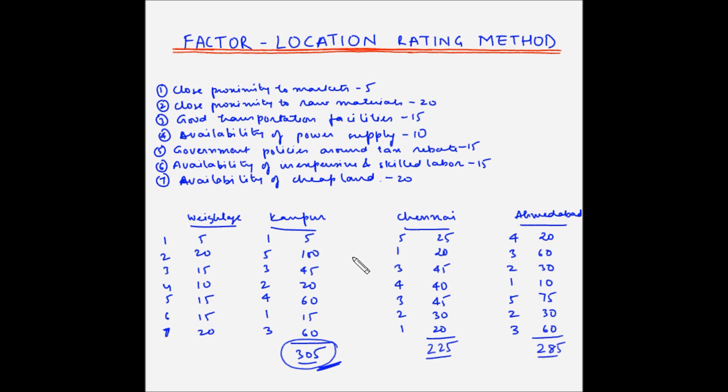Now while on paper this method looks very simple, the most important and difficult part is giving the weightage to the factors and also rating the locations. Some of these ratings can be done quantitatively, like proximity to markets, proximity to raw materials, etc. However, qualitative factors like quality of life, government policies, etc. may need input from senior and experienced managers.